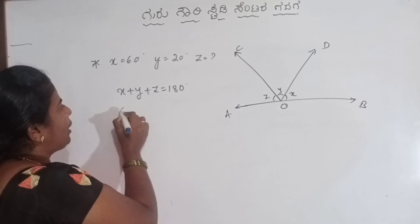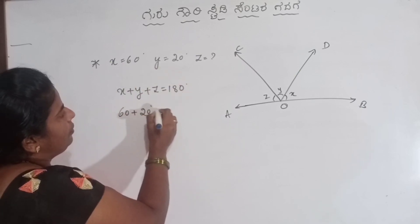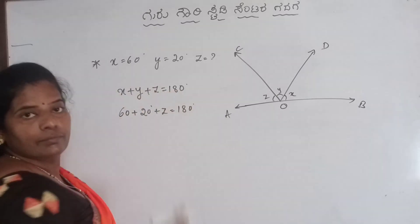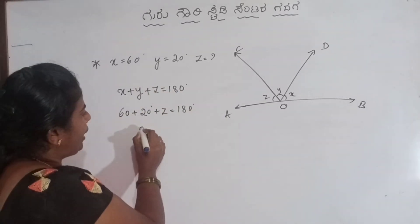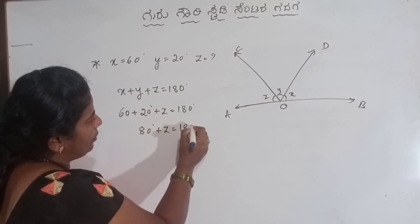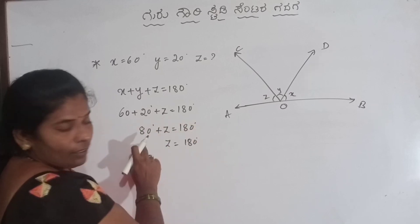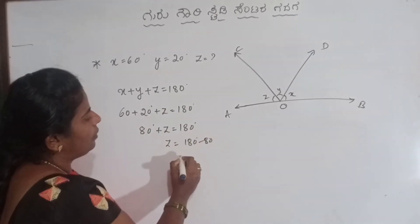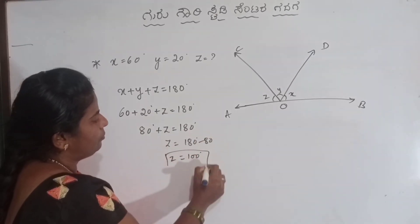X value is 60 degree plus Y value 20 degree. Z find out: 60 plus 20 means 80 degree plus Z equal to 180 degree. Z find out: 180 minus 80. Z equals 100 degree.